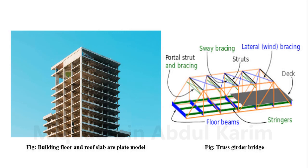Another example of a flat plate is the bridge deck, which is a very common example. The deck slab is made of concrete in a permanent bridge and may be a steel plate in a temporary bridge. The deck slab takes the vertical load and transfers it directly to the beam and ultimately to the support, abutment, and to the foundation.